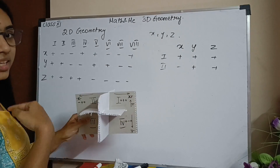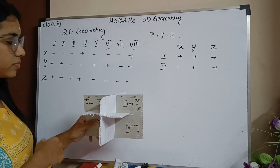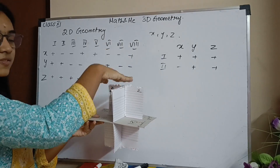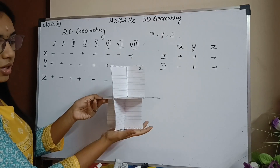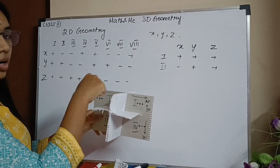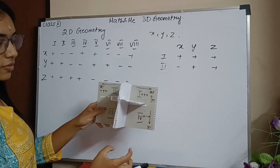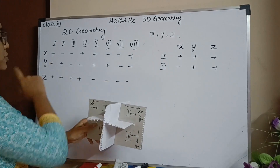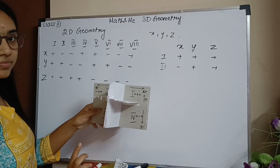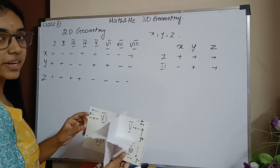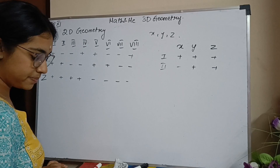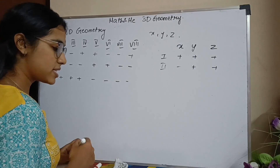To summarize the pattern: in the first octant everything is positive. For z, the first four octants are positive z and the next four are negative z. For y, the first and second octants are positive y, third and fourth are negative y, and that repeats. For x, first octant positive, second negative, third negative, fourth positive — and that pattern repeats on the other side with z negative. Let's now solve some example questions.